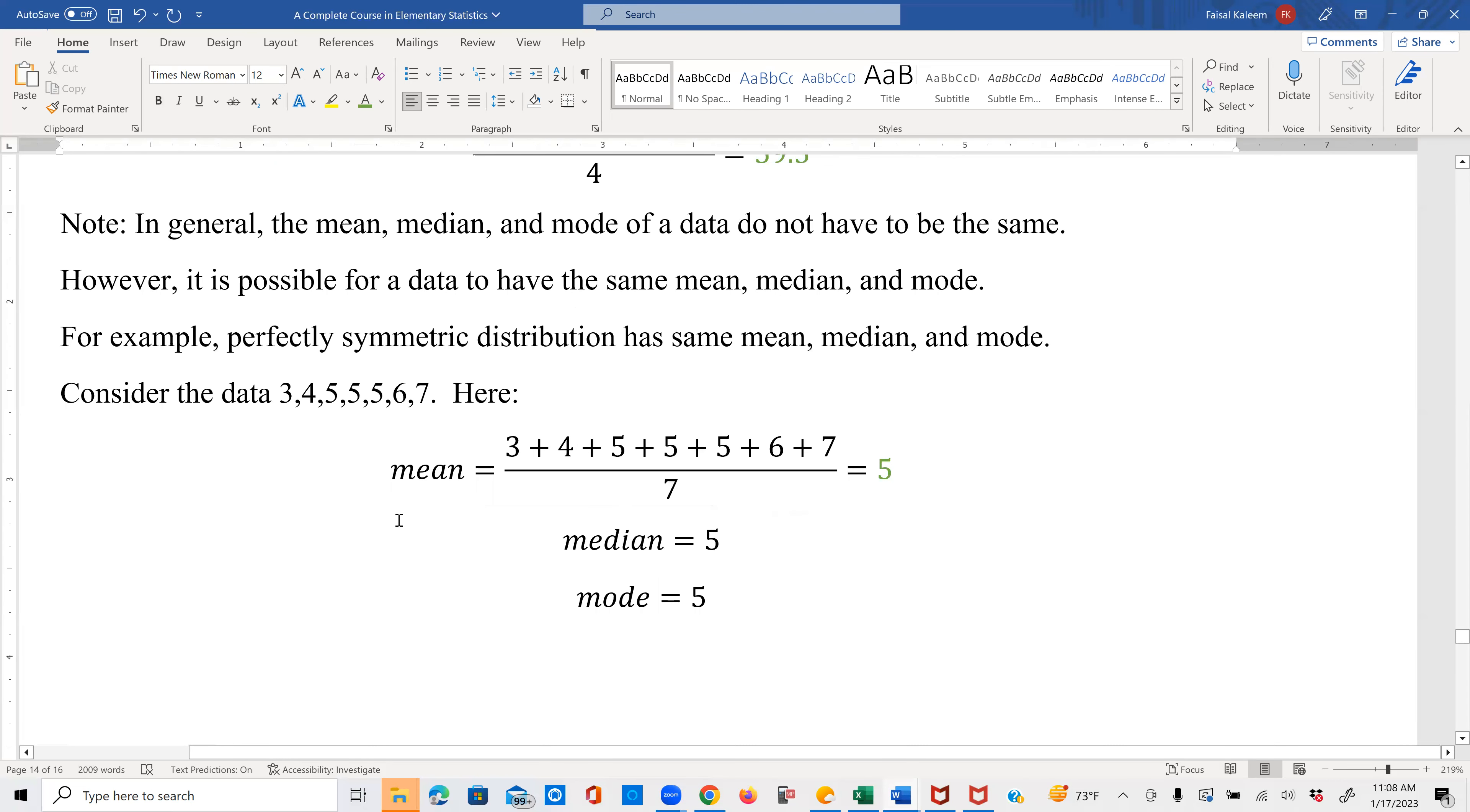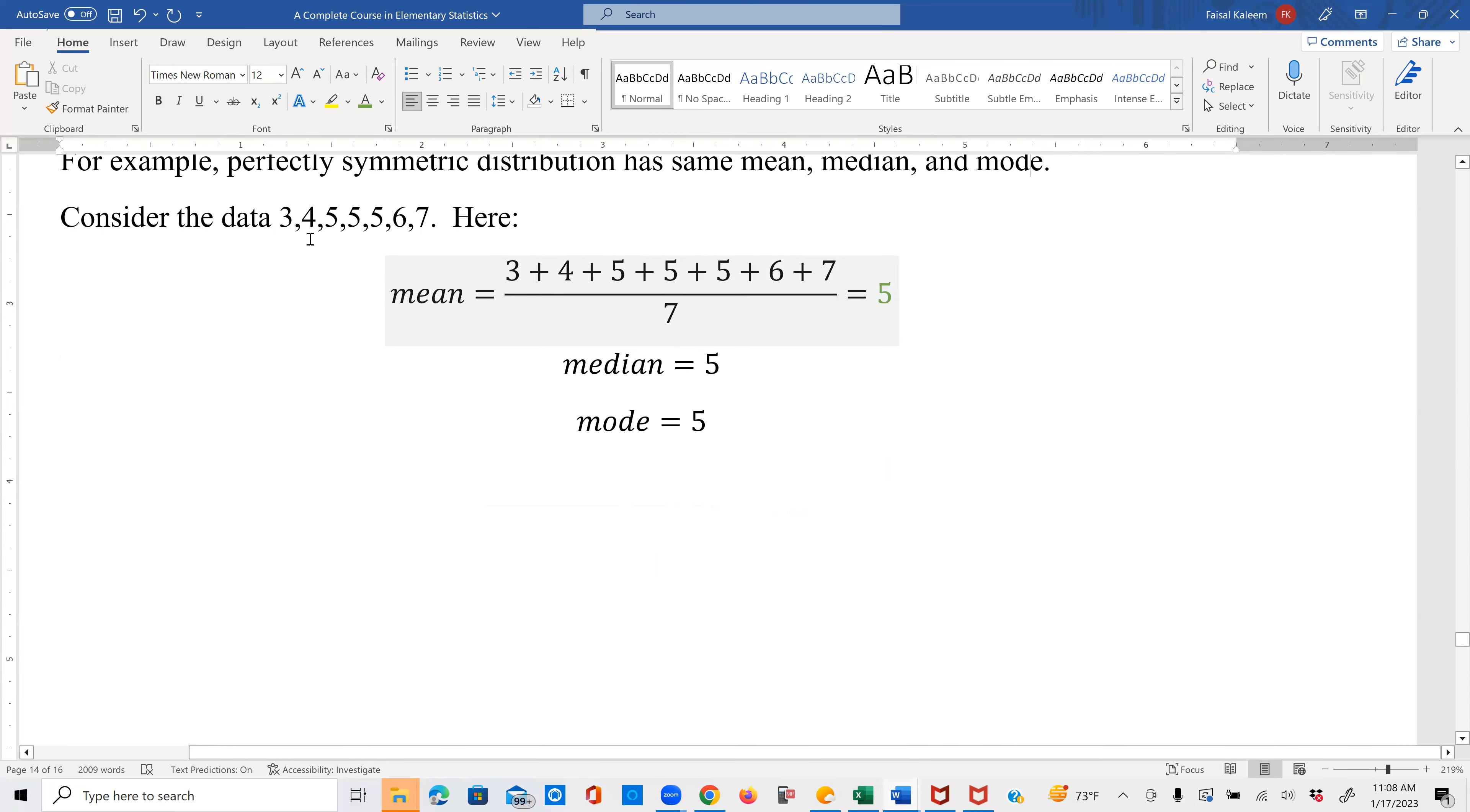And here's an example, numerical example. Consider 3, 4, 5, 5, 5, 6, 7. So the mean is obtained by adding all of them and dividing by 7 because these are 7 values. And we get, so when you add them, you get 7, 12, 17, 22, 20, 35. 35 divided by 7 is 5. So the mean is 5.